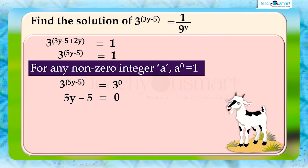That is, 5y equals 5, or y equals 5 by 5, which equals 1.